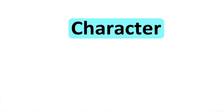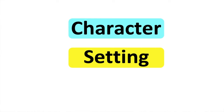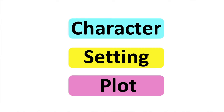Character, Setting, Plot. A story is made up of different elements, including characters, setting and plot. These parts allow the reader to understand and to follow the storyline.